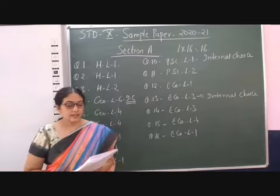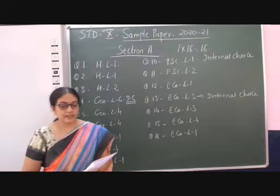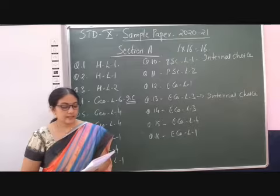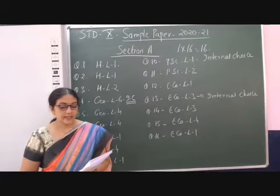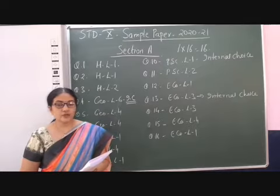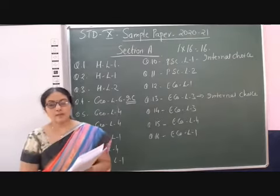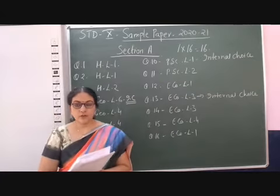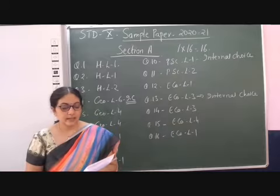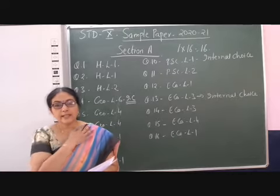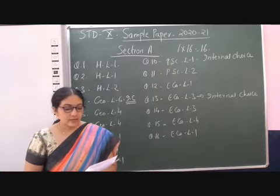Question 7: Identify the soil with the help of the following features. Three features are given: red to brown in colour, sandy in texture, and saline in texture with lack of humus and moisture. Through these clues, since it is saline and lacks humus, it is very clear that it is arid soil. The correct answer is arid soil.